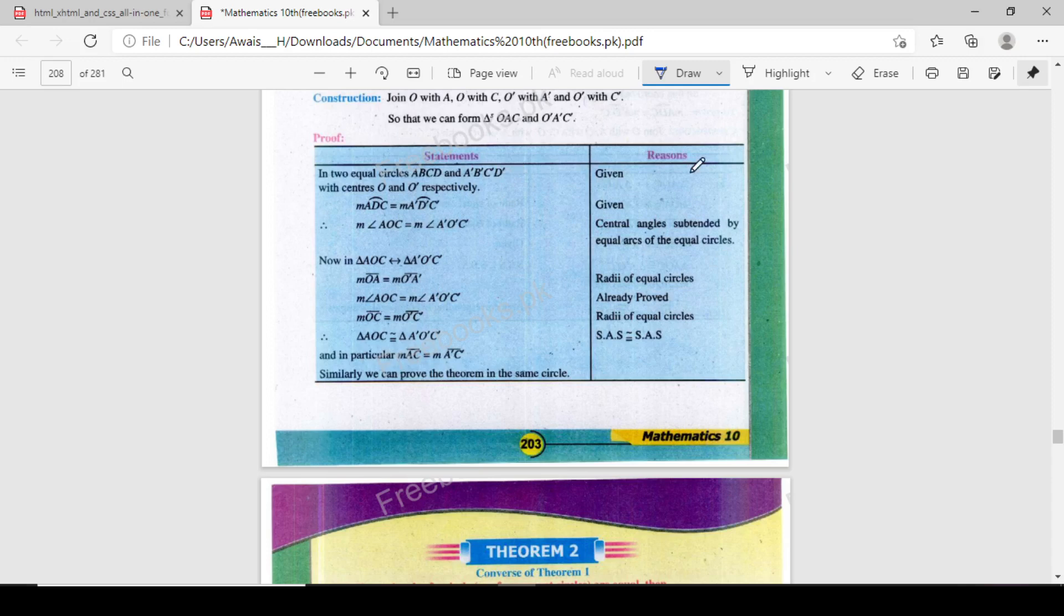Proof: In equal circles ABCD and A'B'C'D' with centers O and O' respectively, given. Again given: m ADC arc is equal to m A'D'C'. These are given. Measurement angle AOC is equal to measurement angle A'O'C', center angle subtended by equal arcs of the equal circles.